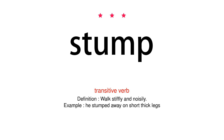Transitive verb. Definition: Walk stiffly and noisily. Example: He stumped away on short thick legs.